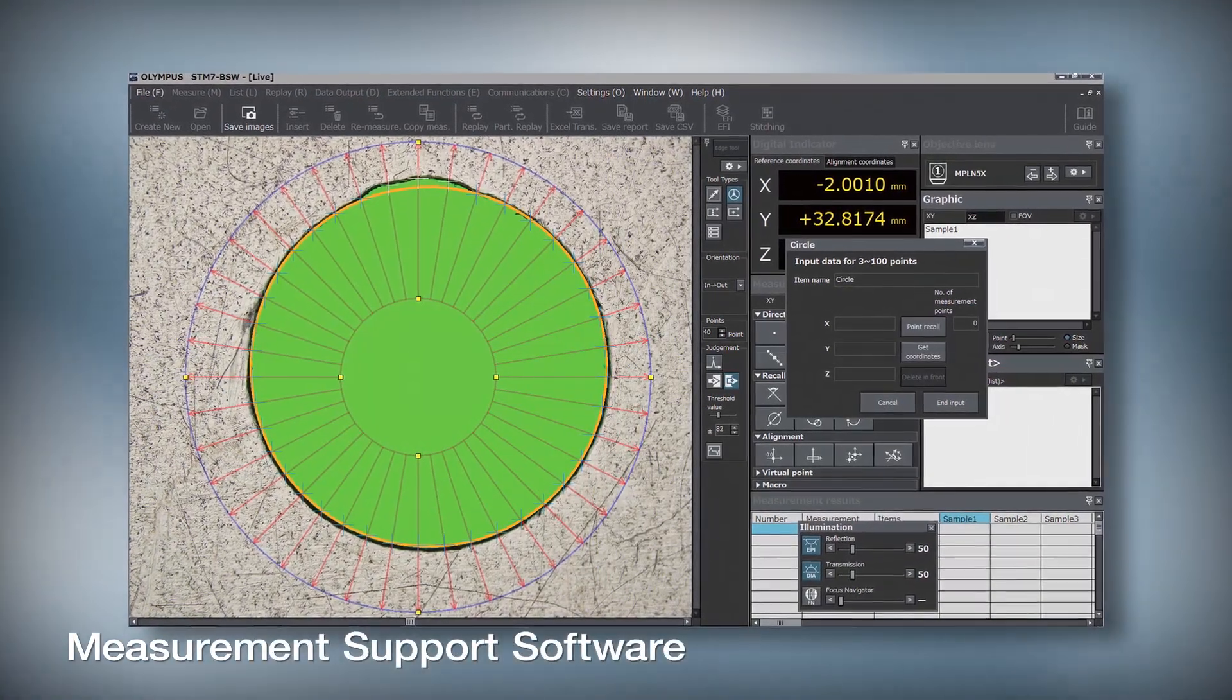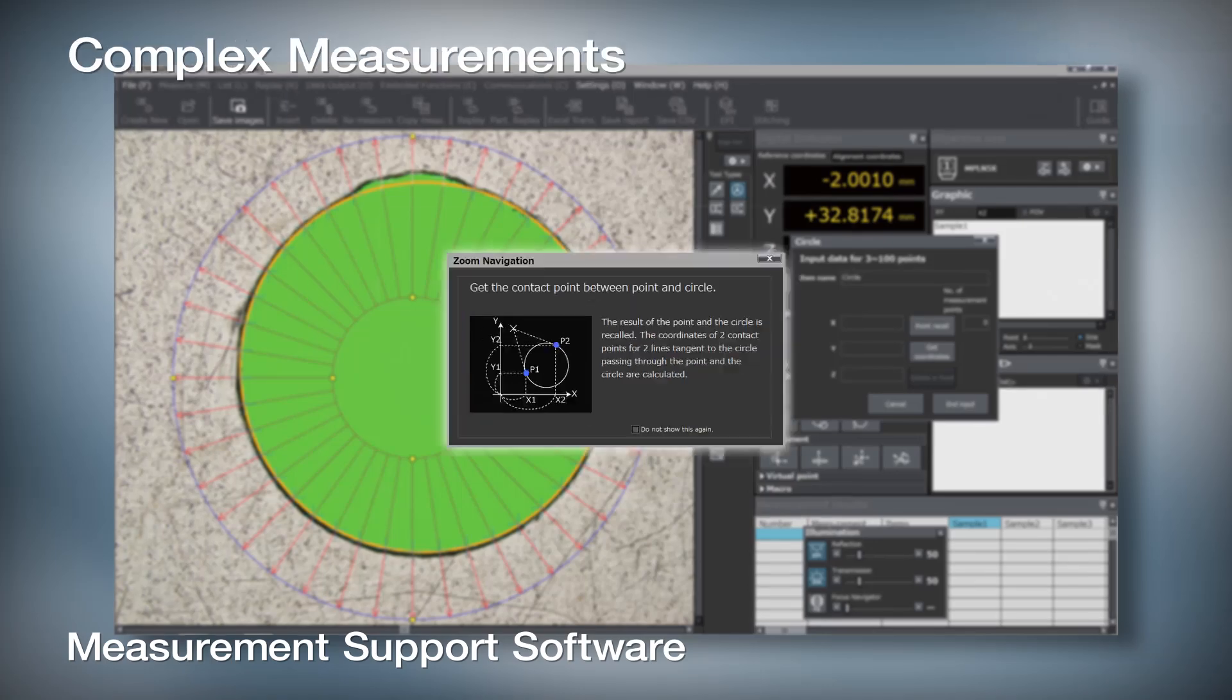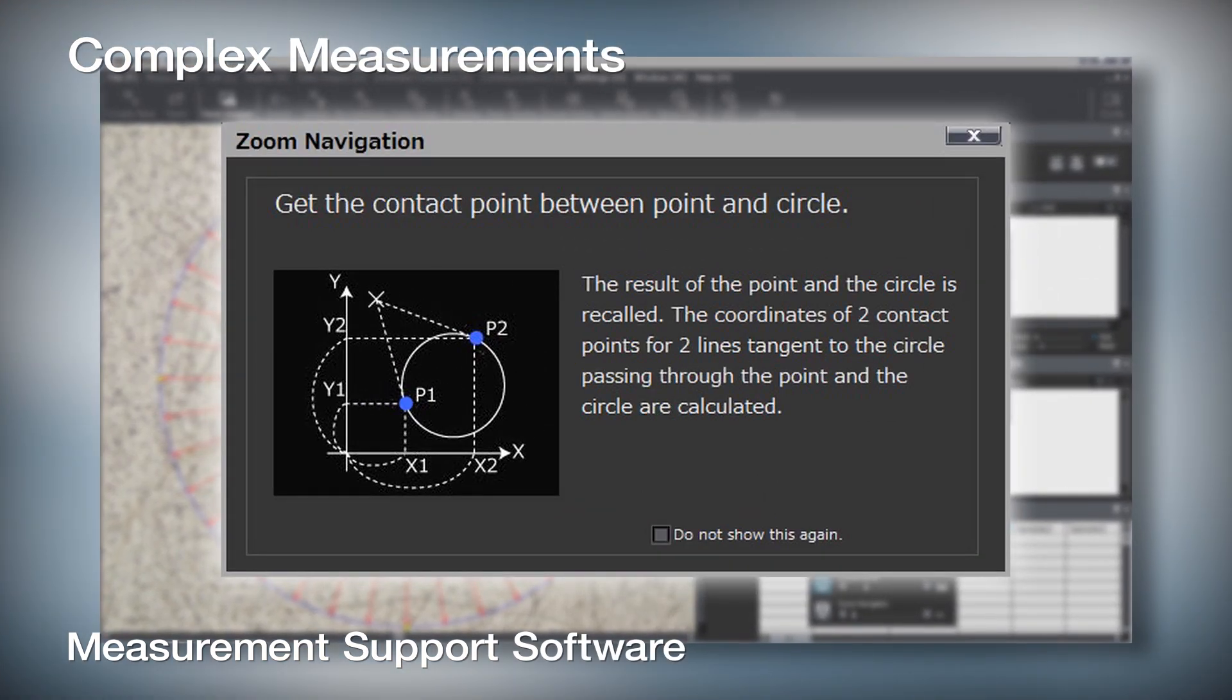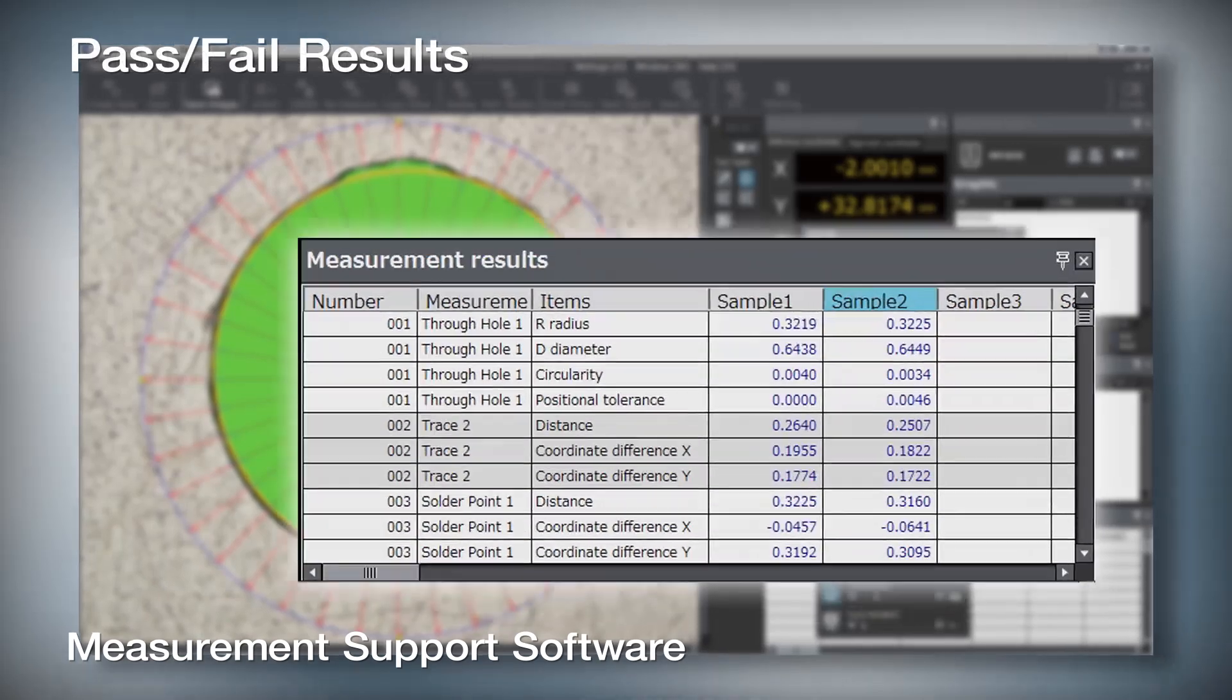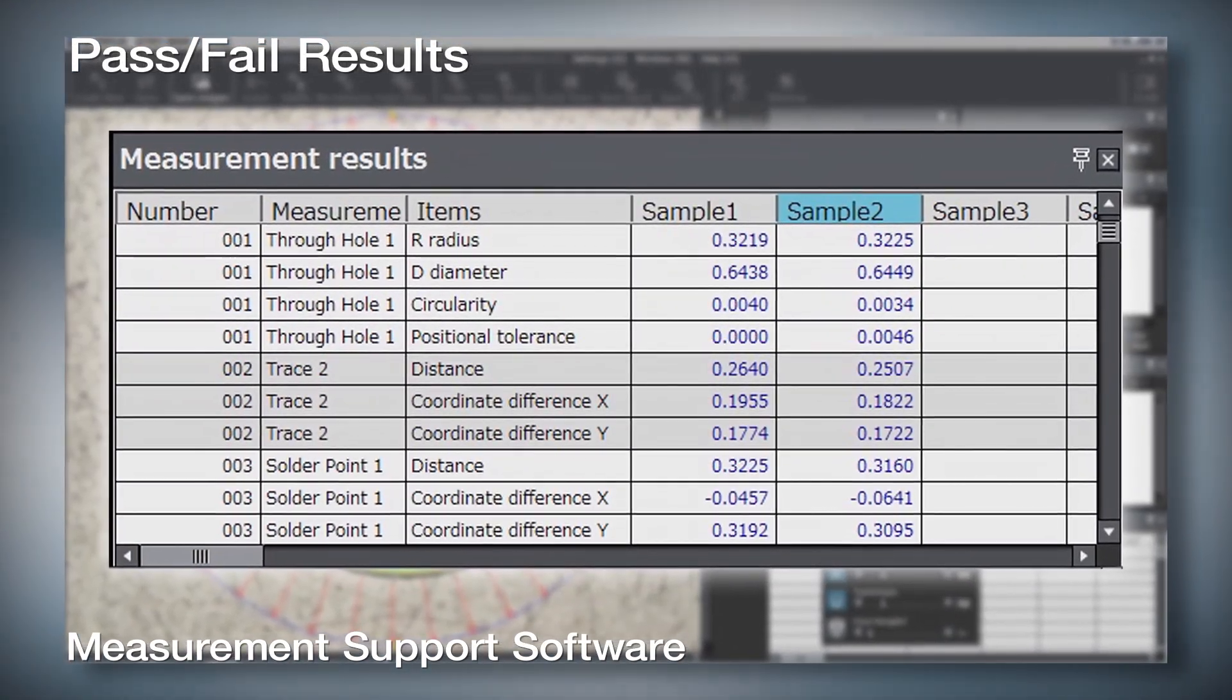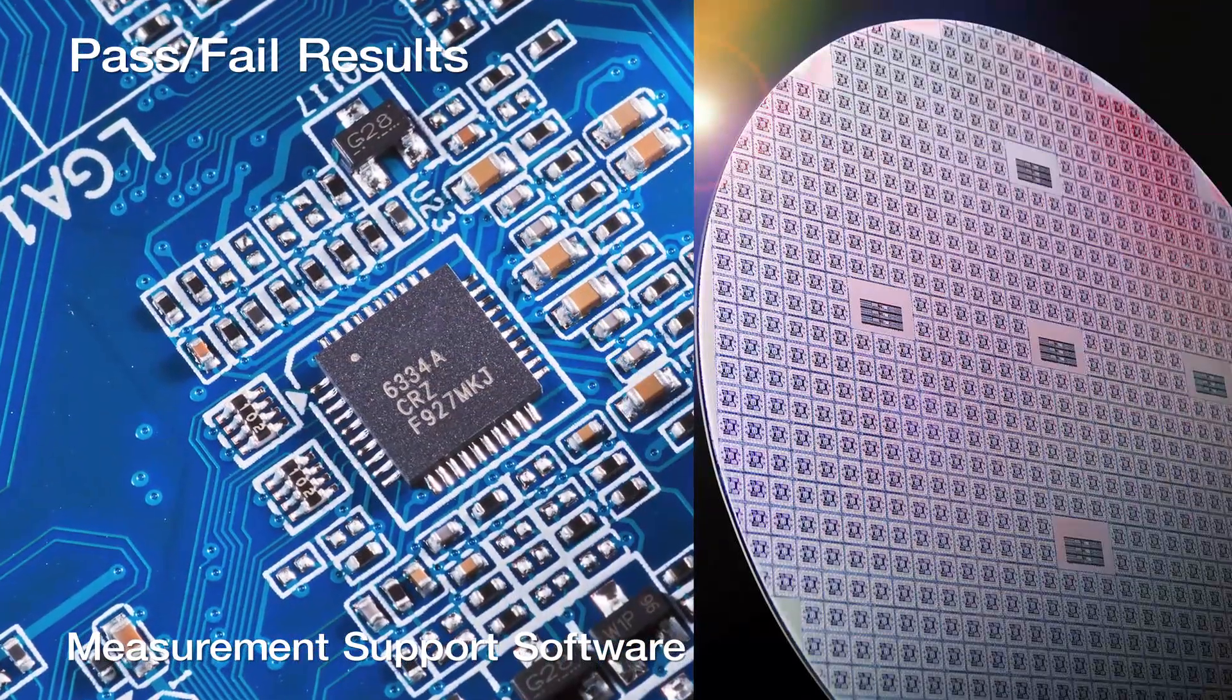STM-7 measuring software can be added, enabling operators to take complex measurements, create testing routines, and efficiently deliver pass-fail results for components such as printed circuit boards and wafers.